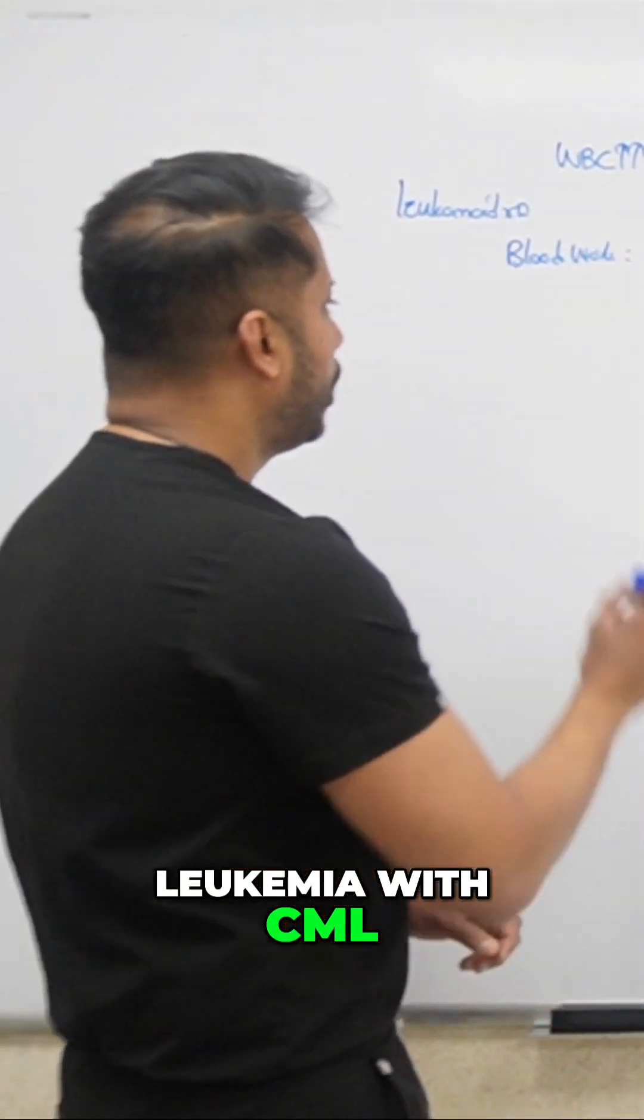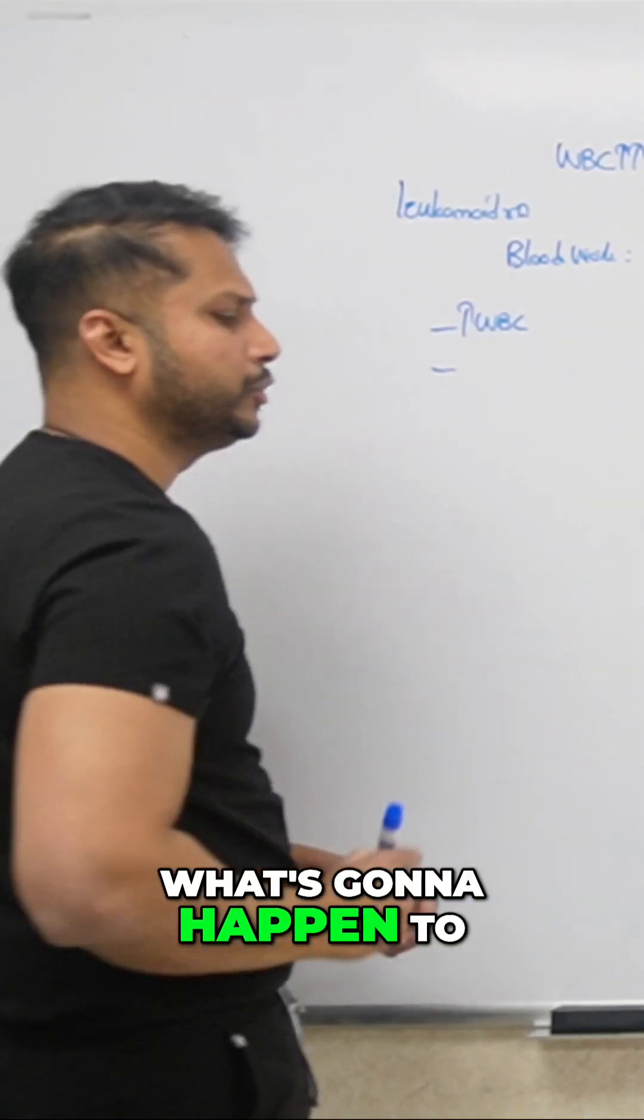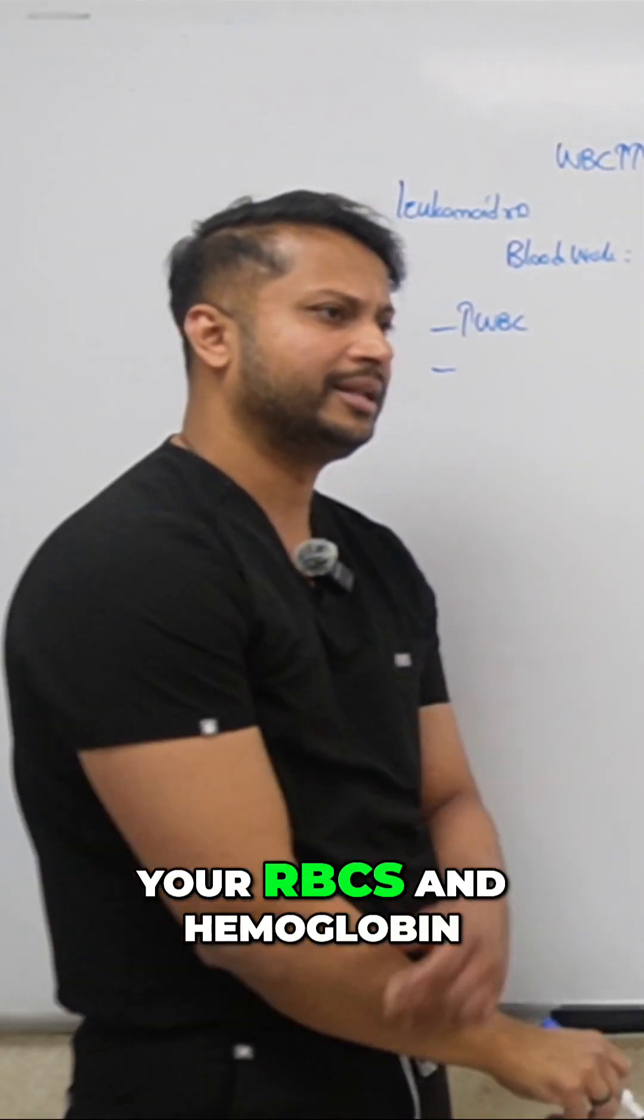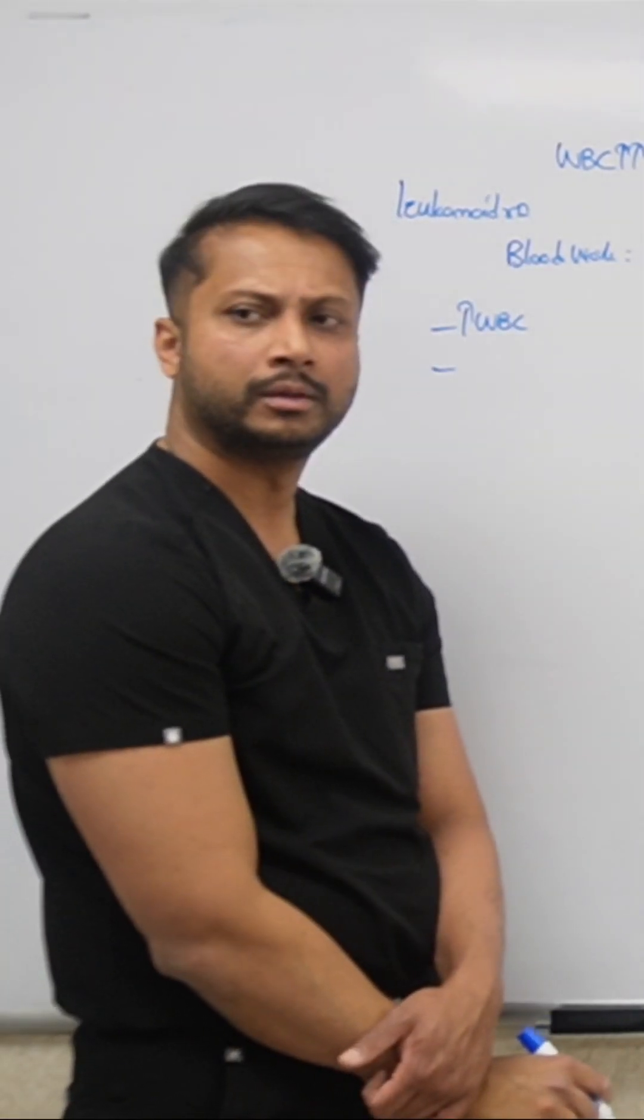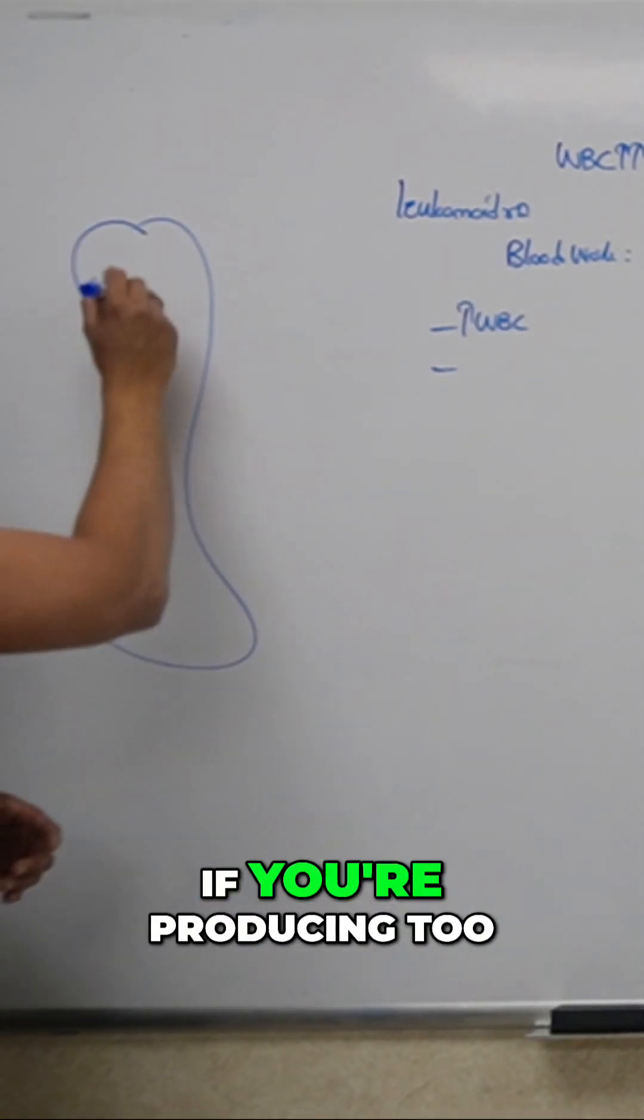When it comes to leukemia with CML, obviously WBC is going to be high. What's going to happen to your RBCs and hemoglobin? A general concept for any leukemia: this is your bone marrow. If you're producing too much WBC, is it going to take up all the space?